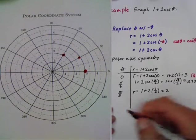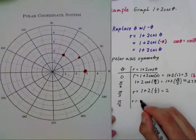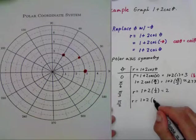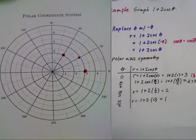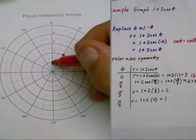My next point is pi over two. So r equals one plus two times cosine of pi over two, which is zero. So this equals one. I have one at pi over two, which is right here.